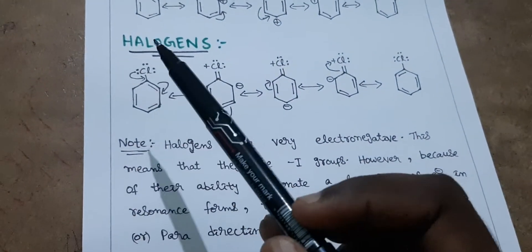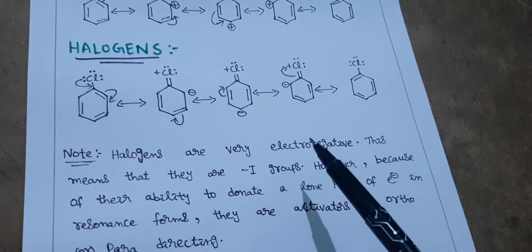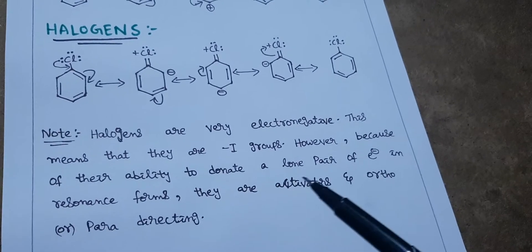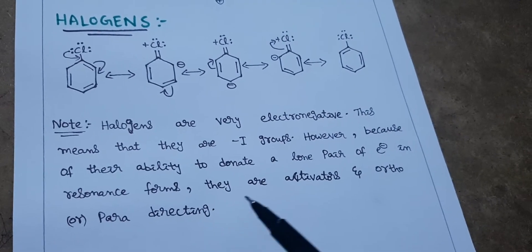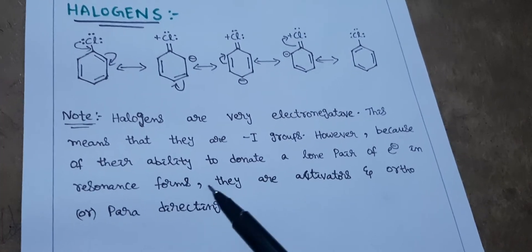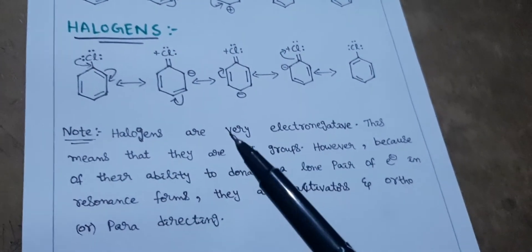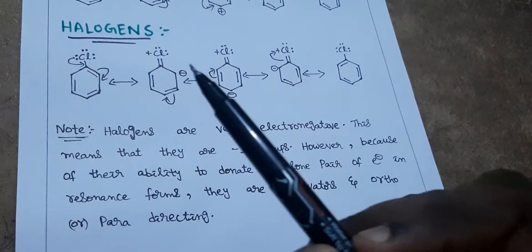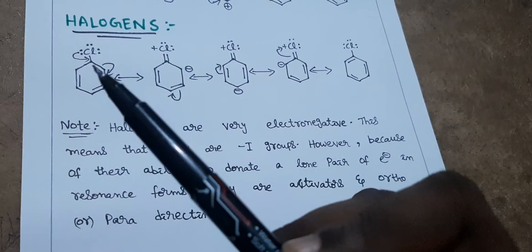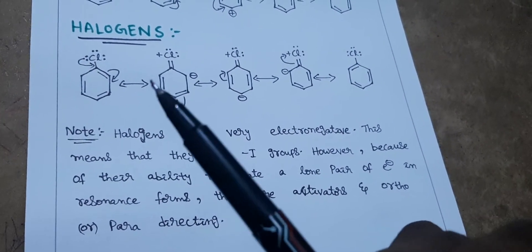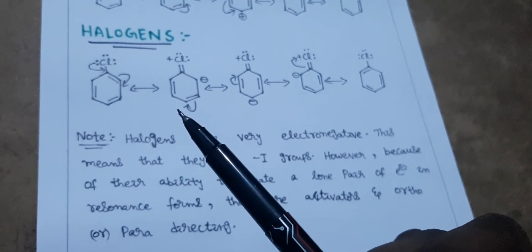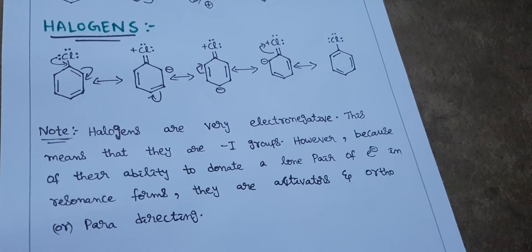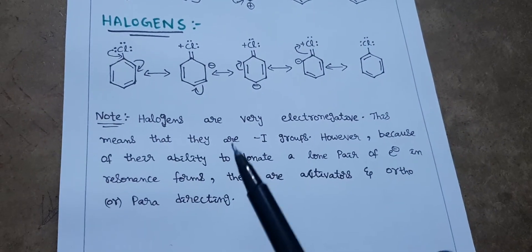Yes, it does happen. Halogens are very electronegative — their outer shell has seven electrons (configuration ns² np⁵). They have three lone pairs and one bond with the benzene ring. They are highly electronegative, especially fluorine, and yes they are minus-I groups. However, because of their ability to donate a lone pair of electrons in resonance, they are ortho and para directing groups. They show minus-I effect and are highly electronegative, but due to lone pair donation in resonance forms, they direct ortho and para.